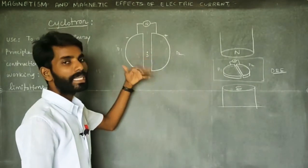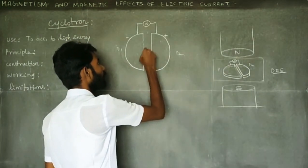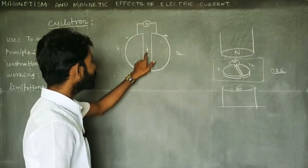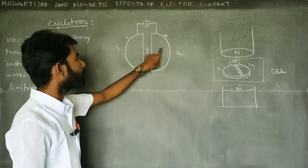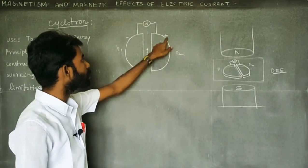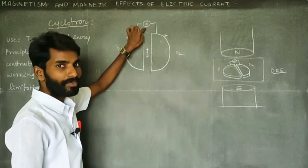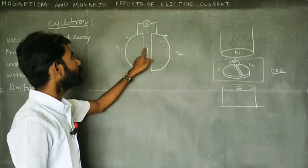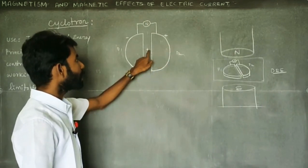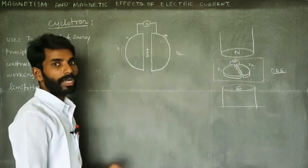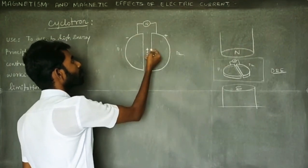The particle gains energy. At that moment, if the source of a positive ion is there, the positive ion is positive. At that moment, the polarity is set so the high frequency oscillator makes D1 negative. The positive ion is attracted toward D1 because D1 is negative. The negative potential attracts the positive potential — it accelerates.